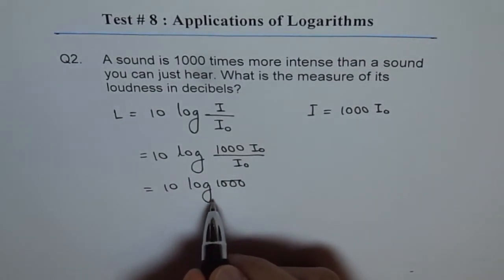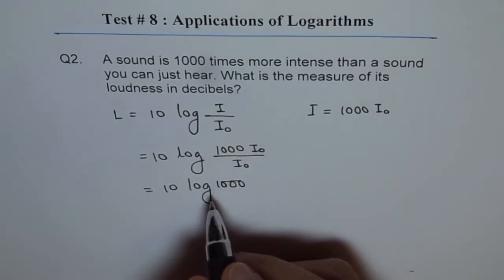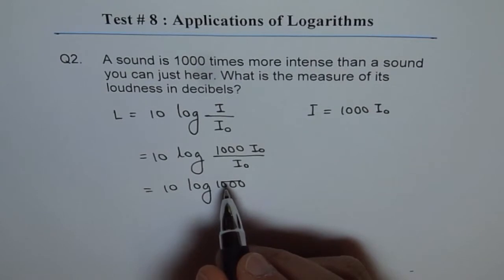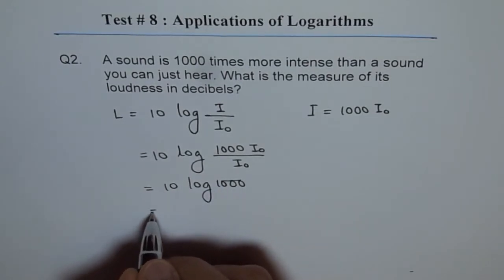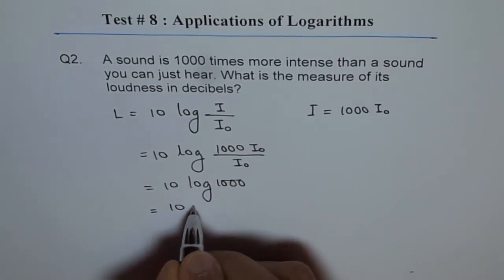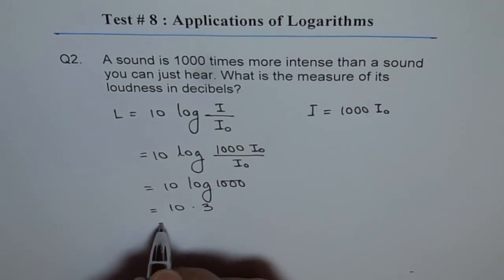So this is to the base 10, and thousand is 10 to the power of 3. So we get this as 10 times 3, which is 30.